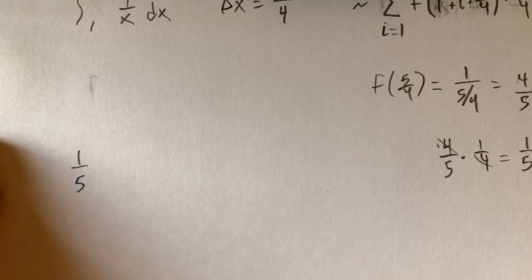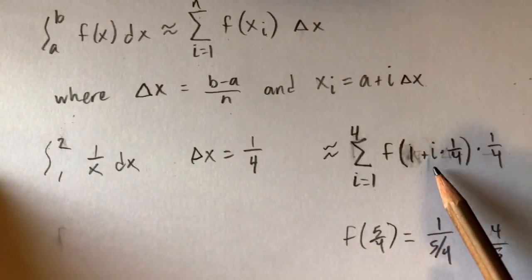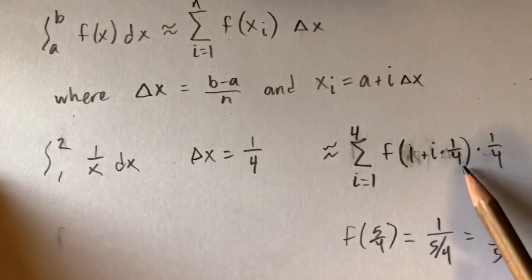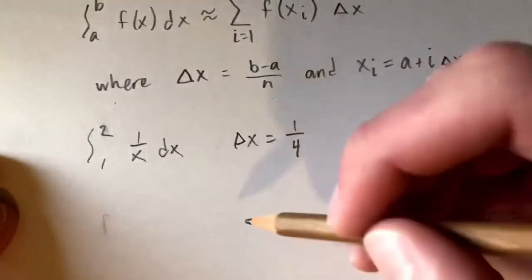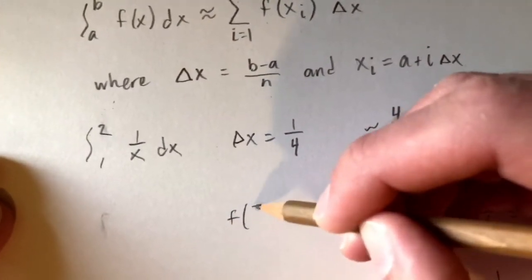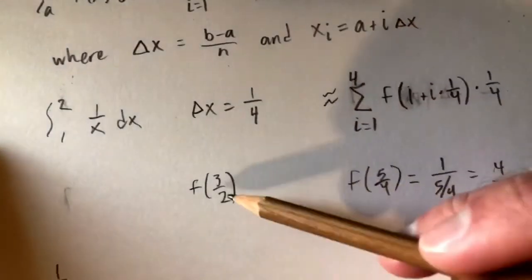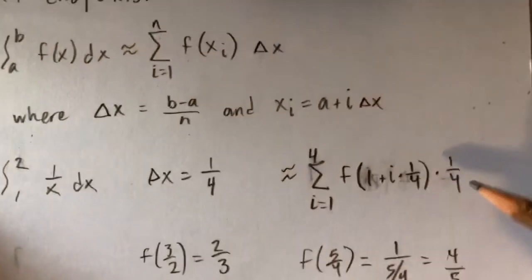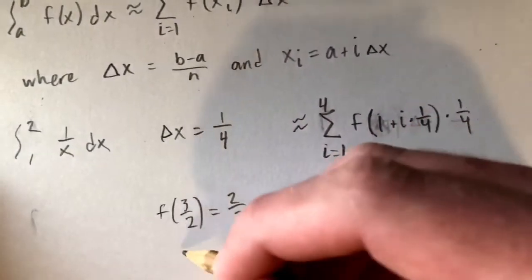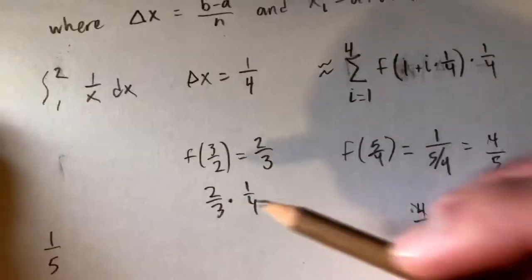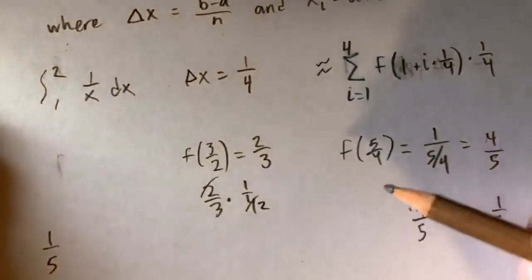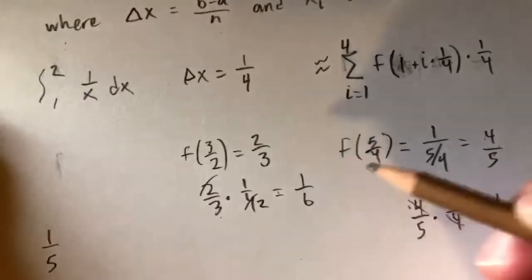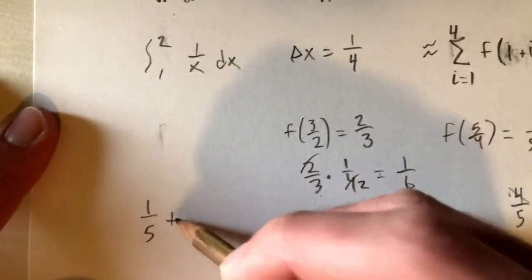For i equals 2, we get 1 plus 2 times 1 fourth, which is 1 plus 1 half, giving us 3 halves. So f of 3 halves equals 1 over 3 halves, which is 2 thirds. Then 2 thirds times 1 fourth: the 2 cancels with the 4 leaving 2, so we get 1 over 6. Our second term is 1 sixth.